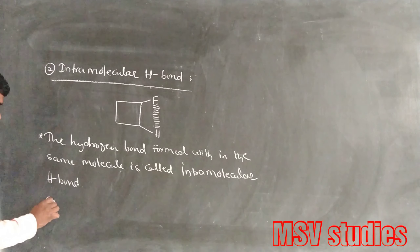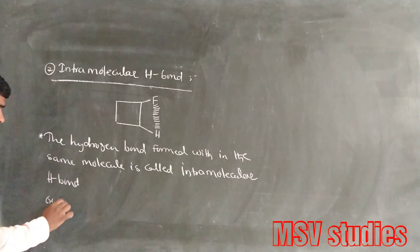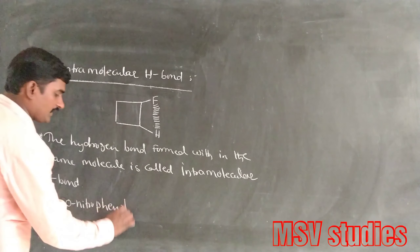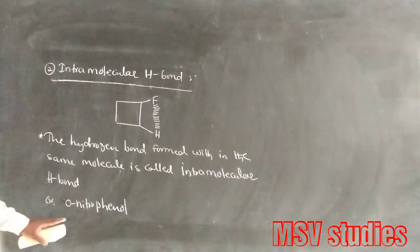An example of intramolecular hydrogen bond is ortho-nitrophenol. The molecule has a nitro group (N=O) and a hydroxyl group (O-H) at the ortho (1,2) positions on the benzene ring. The hydrogen bond is formed between the hydrogen of the hydroxyl group and the oxygen of the nitro group within the same molecule.